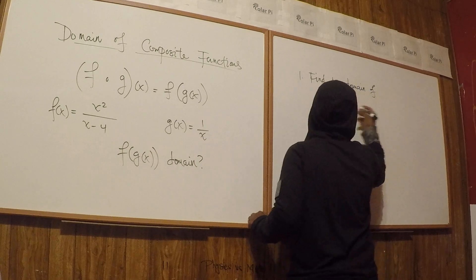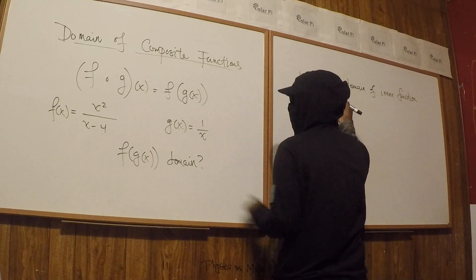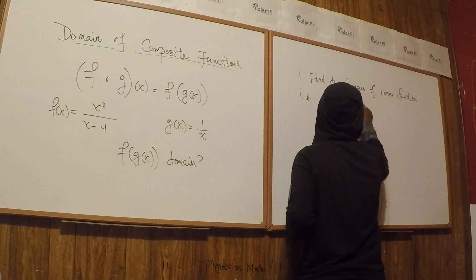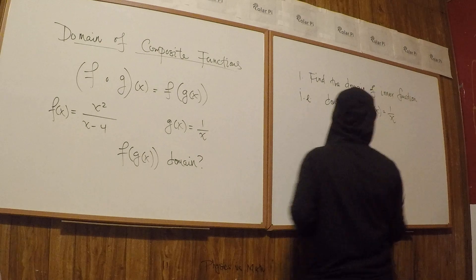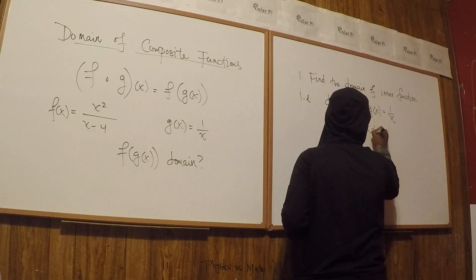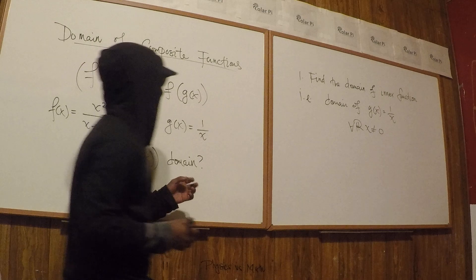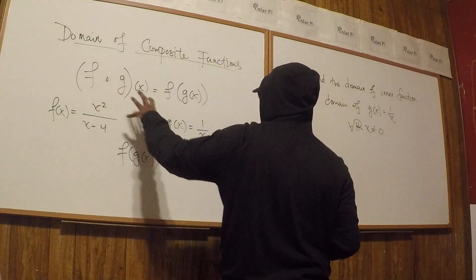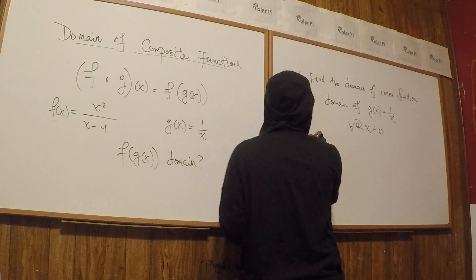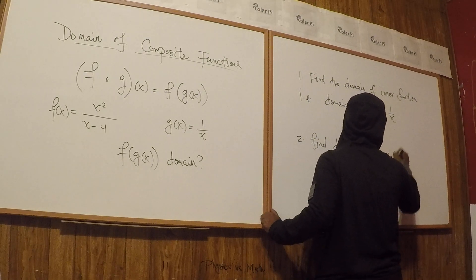For finding the domain of composite functions, what you must do is number one: find the domain of the inner function. In this case, domain of g of x. So in our case, i.e., domain of g of x equals 1 over x, and we know the domain of g of x equaling 1 over x is all real x not equal to zero. That's the domain of g of x. And then to answer the question finding the domain of the composite function here, number one, right. Number two: and then what you got to do is find domain of f of g of x and put them together, couple with one.